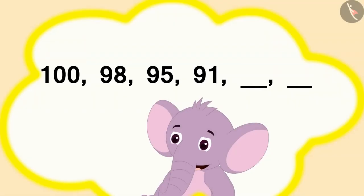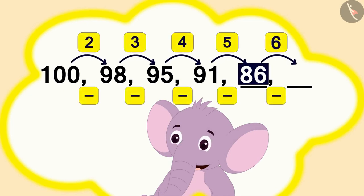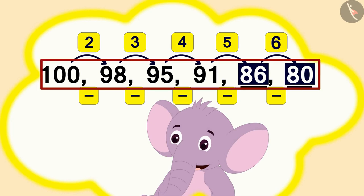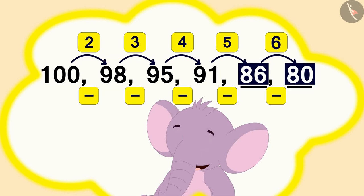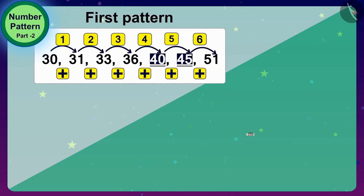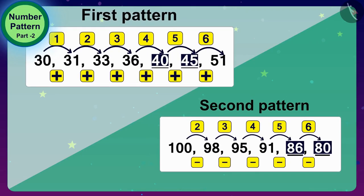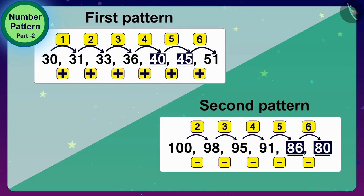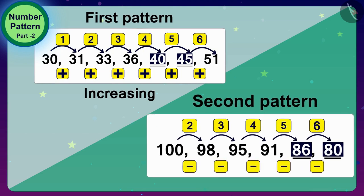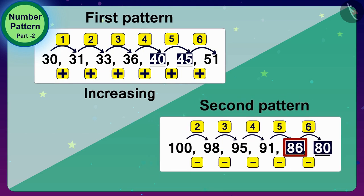Appu also used subtraction process like us to fill in the blanks of this number pattern correctly. Children, if you look at the first and second pattern asked by the angel, you will find that the numbers in the first number pattern are increasing. And the numbers in the second number pattern are decreasing.